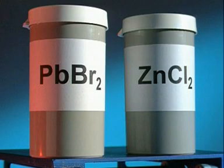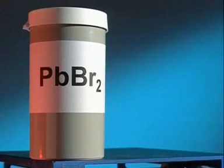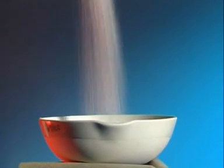Change the compound from lead bromide to zinc chloride and the products of electrolysis will be different. What would you expect to see happening when electricity is passed through molten zinc chloride?